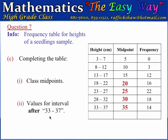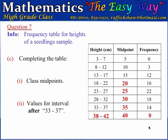The next part requires us to complete the row for the class interval that follows 33 to 37. The next class interval would be 38 to 42 — we add 5 to the lower limit 33 to get 38, and add 5 to the upper limit 37 to get 42. The midpoint is 40, and the frequency for this interval is 0. The table is now complete.